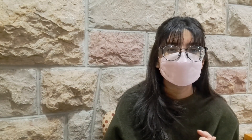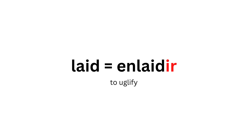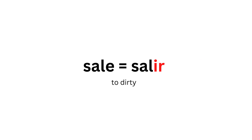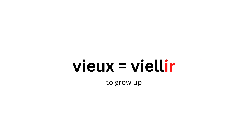And then we have laid — enlaidir, which means to make ugly or to uglify. Pâle becomes pâlir, meaning to fade or to grow pale, so something that's fading we'd say pâlir. Profond becomes approfondir, meaning to deepen. And then sal becomes salir, meaning to make dirty. And finally, vieux becomes vieillir, meaning to grow old. So these were some of the verbs I particularly wanted to discuss because of how they turn from an adjective into a verb.